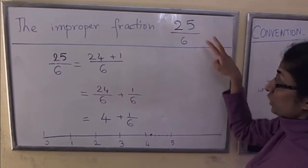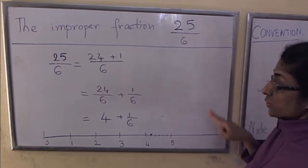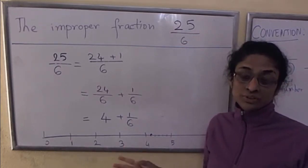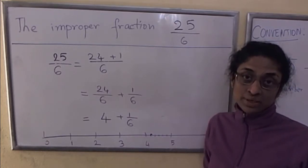So 25 over 6 is a point on the number line. Let's think intuitively about which point on the number line it is.